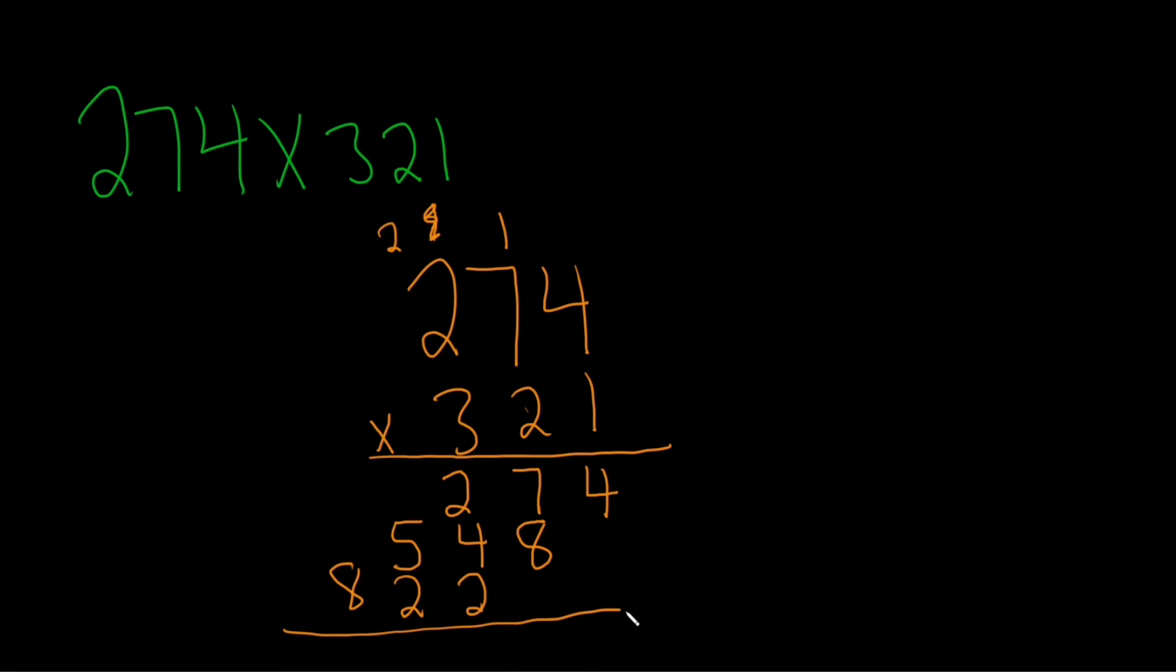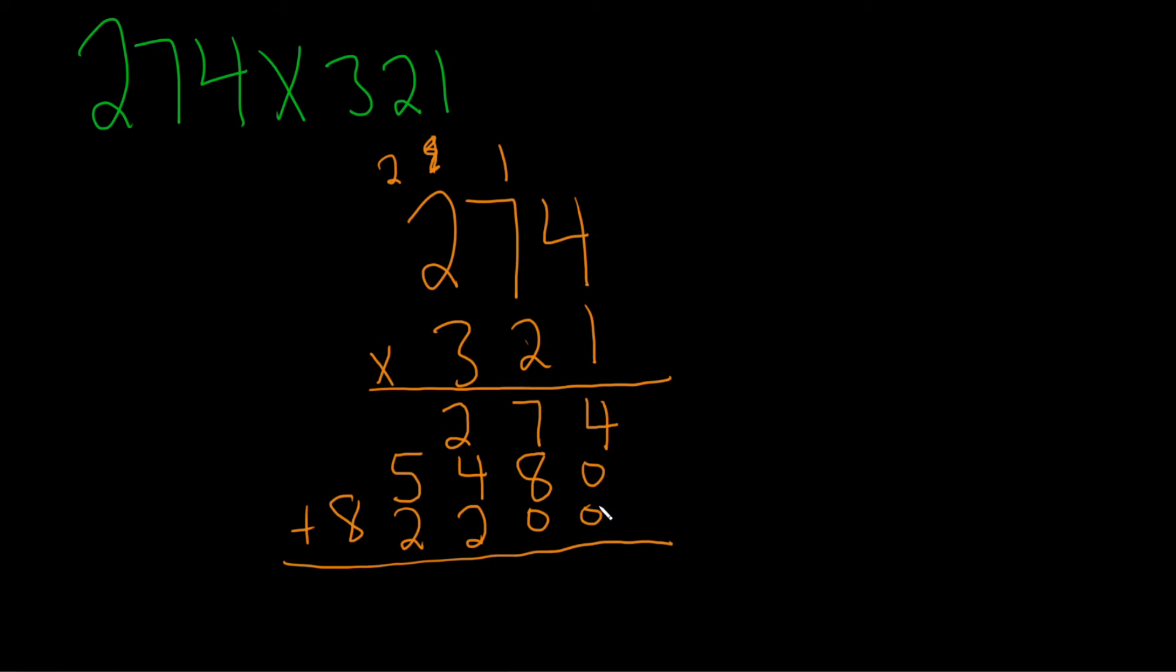Then you draw a line and put a plus sign. Write 0s for all of your missing places, and then you add straight down. 4 plus 0 plus 0 is 4. 7 plus 8 plus 0, that's 15. So we write down the 5 and carry the 1.